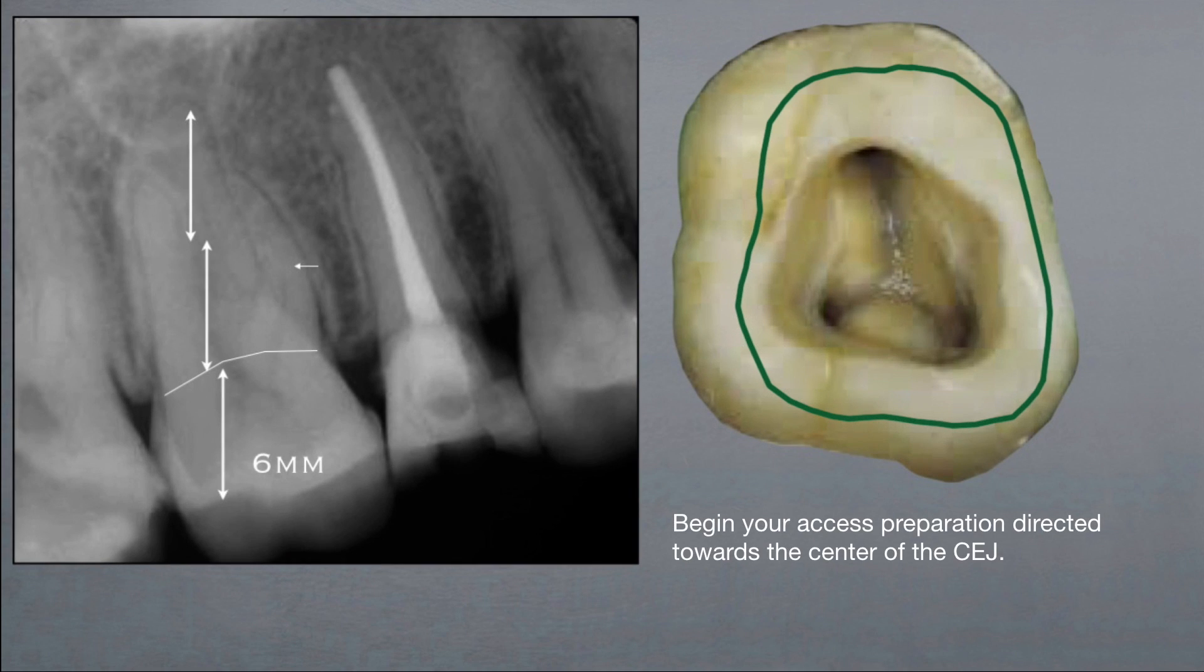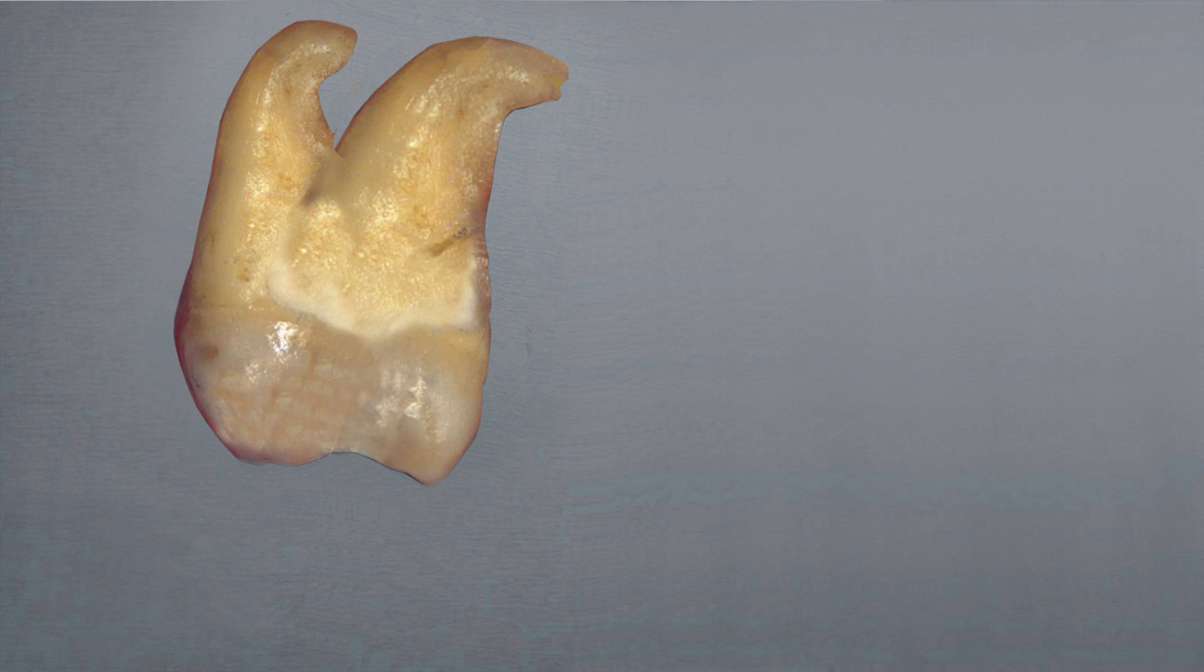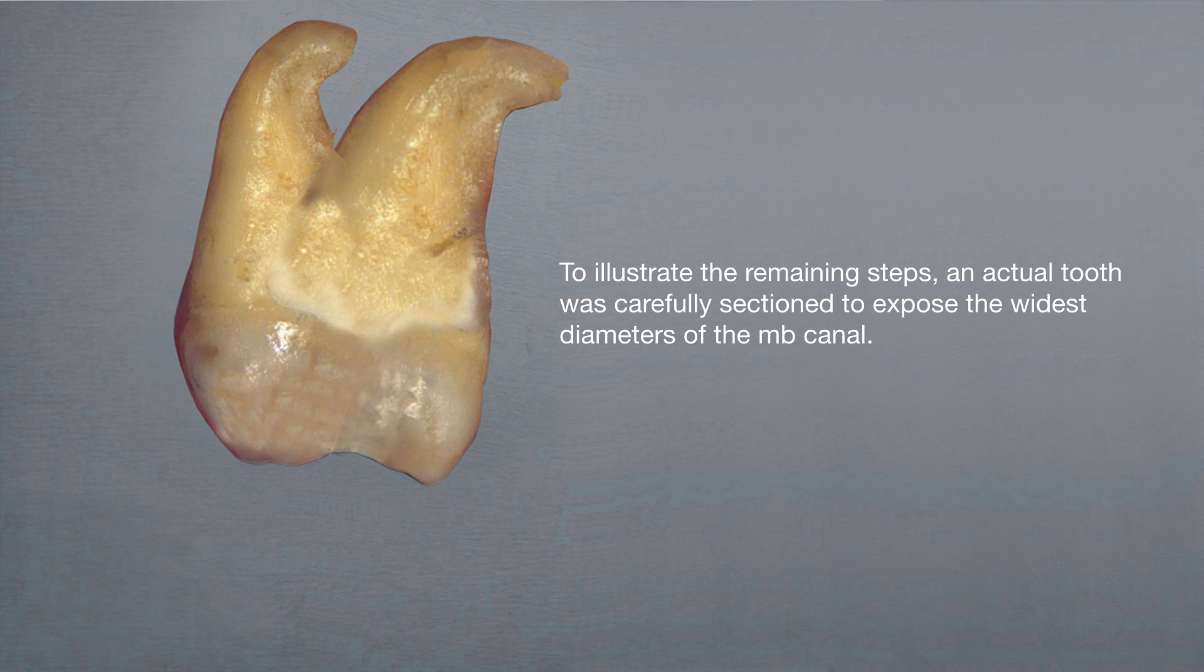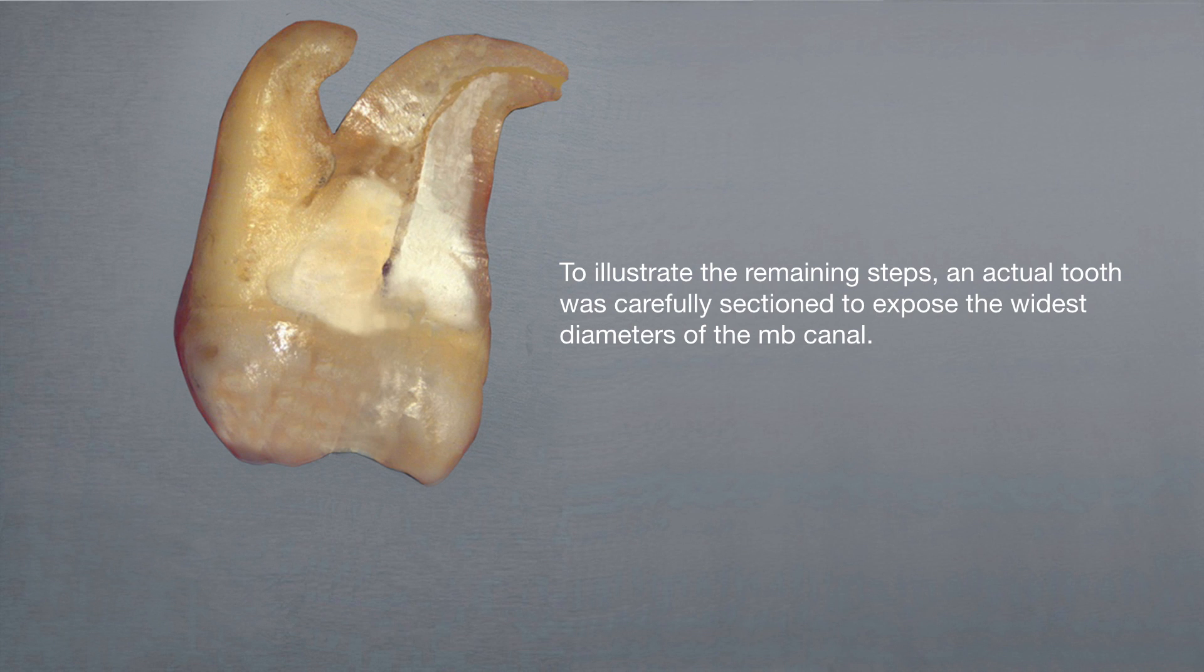Begin your access preparation directed towards the center of the CEJ. To illustrate the remaining steps, an actual tooth was carefully sectioned to expose the widest diameters of the MB canal.